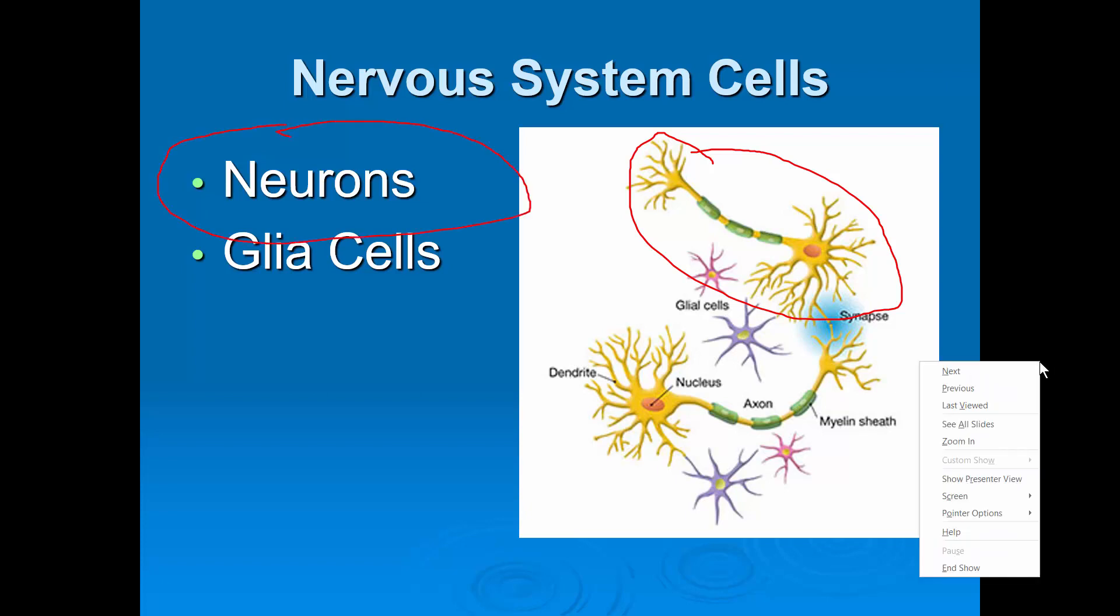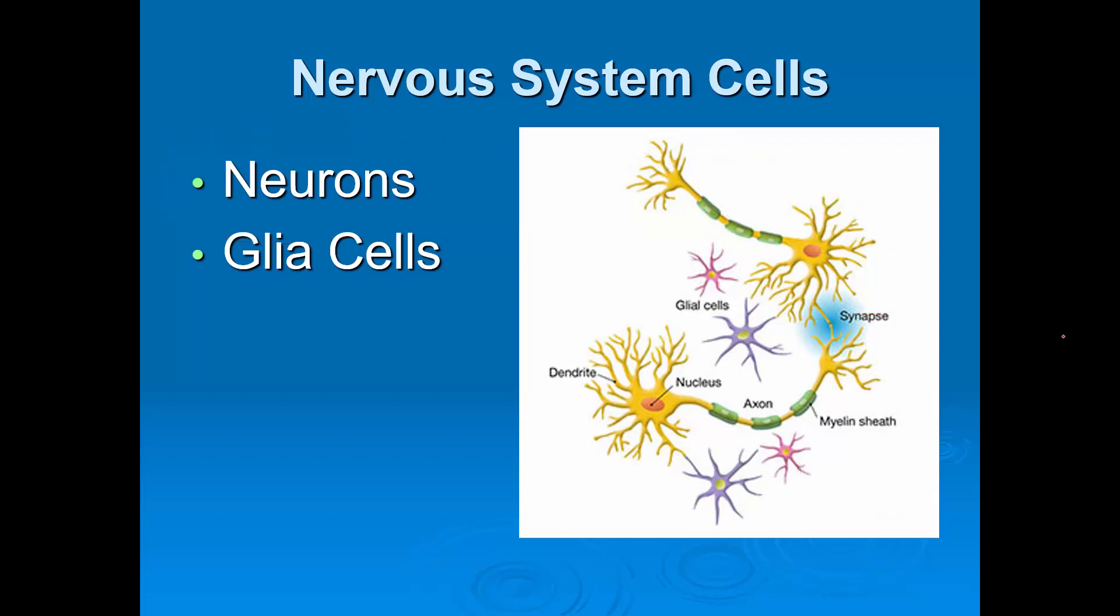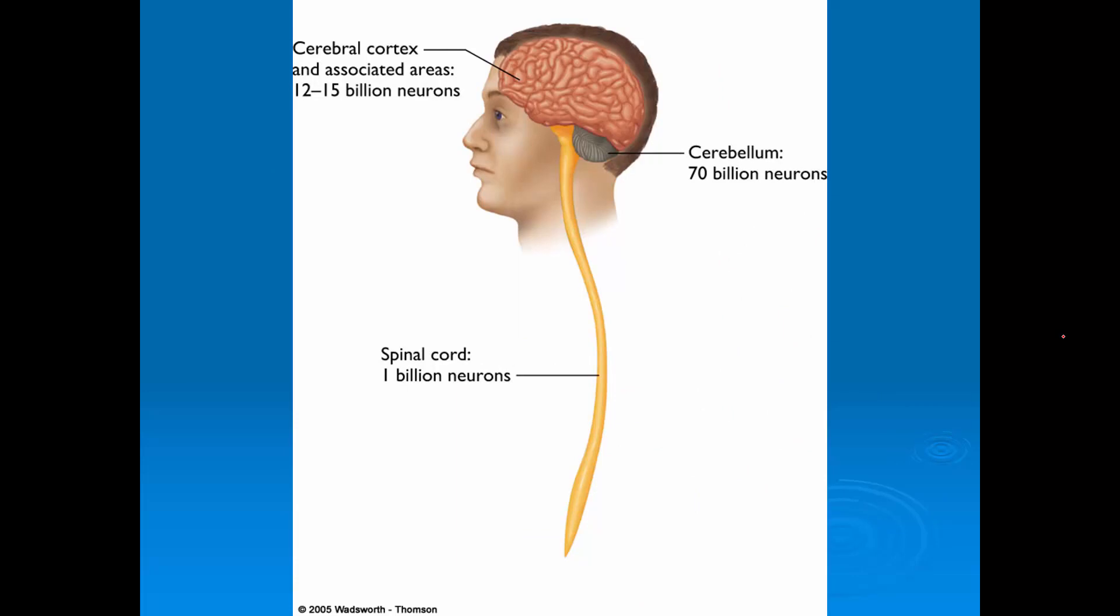What we're going to do next is get into the inner workings of the neuron and explain the basic parts here. Before we get into that, I want to show you where these neurons are distributed throughout the central nervous system, i.e., the brain and spinal cord.